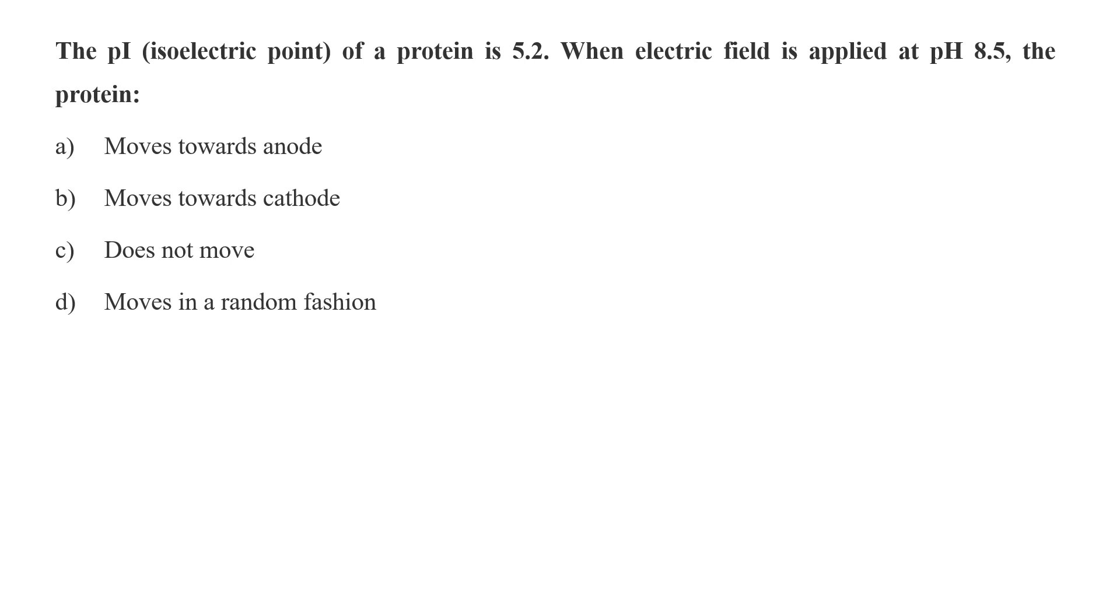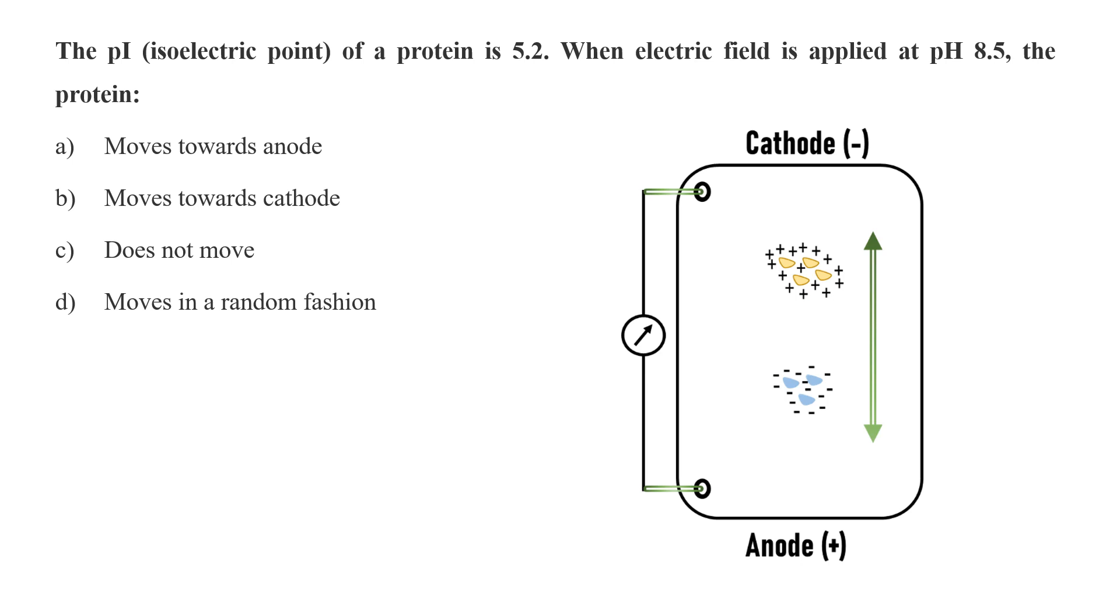The pI or isoelectric point of a protein is 5.2. When electric field is applied at pH 8.5, the protein will move towards anode, move towards cathode, does not move, or moves in random fashion? The pI given is 5.2, that means at 5.2 pH it will develop equal amount of positive and negative charge. That means at pH 5.2 it will not move. Now if you put this protein at a high pH, then it will develop a net negative charge and hence it will move towards the positive electrode, that is anode. So here option A would be the correct answer.